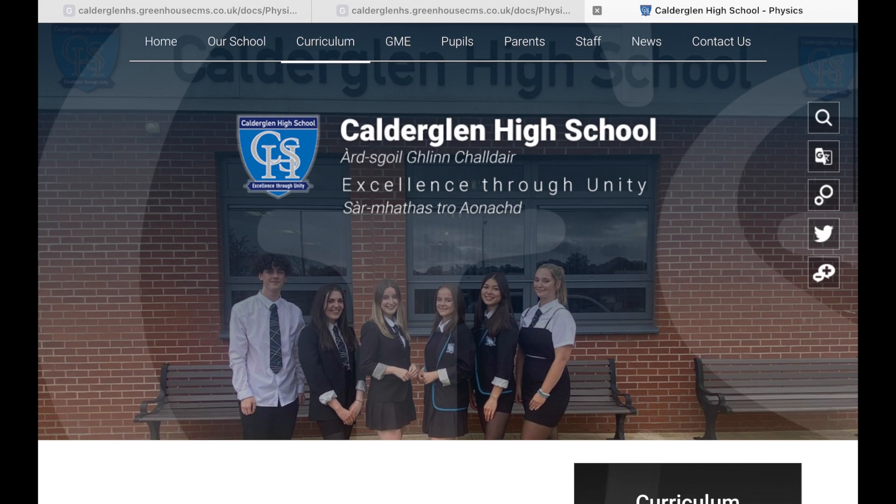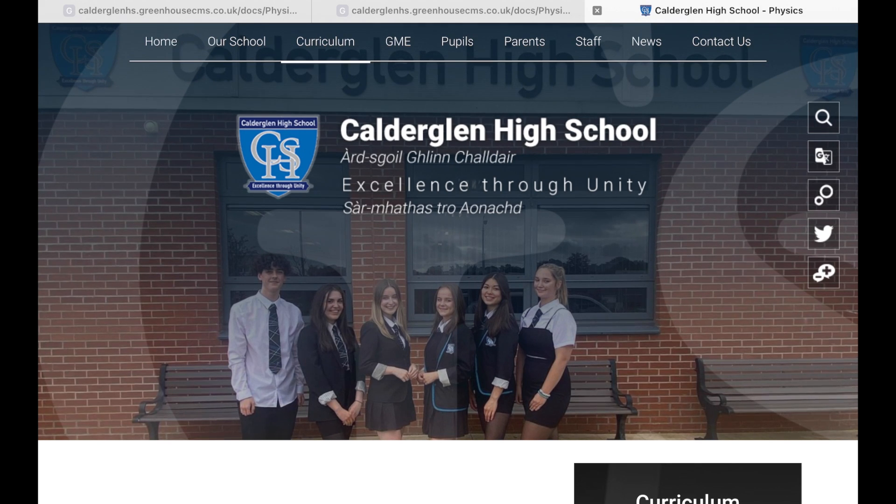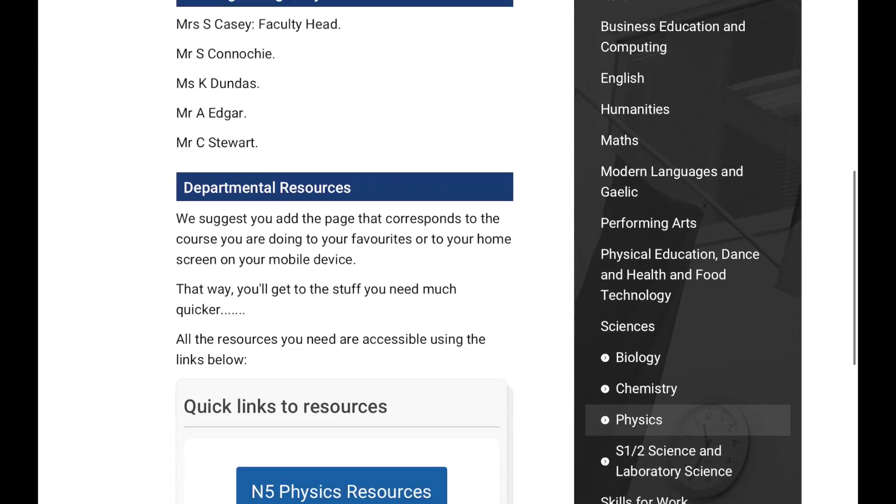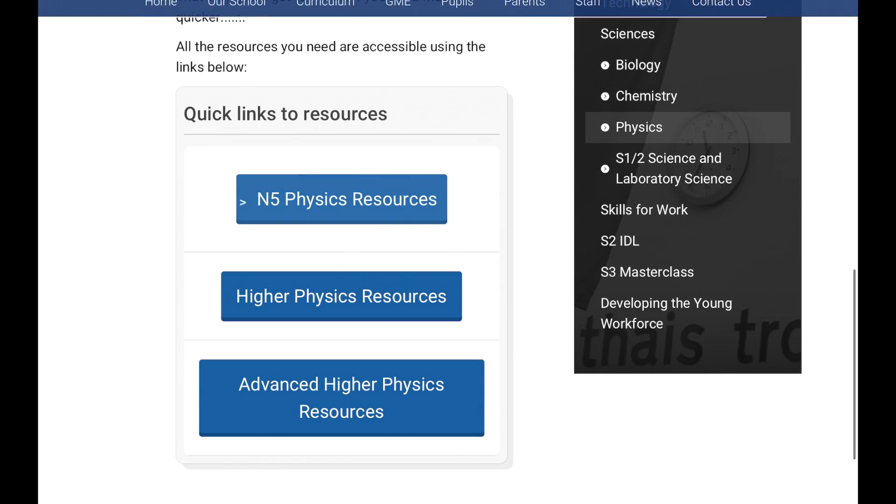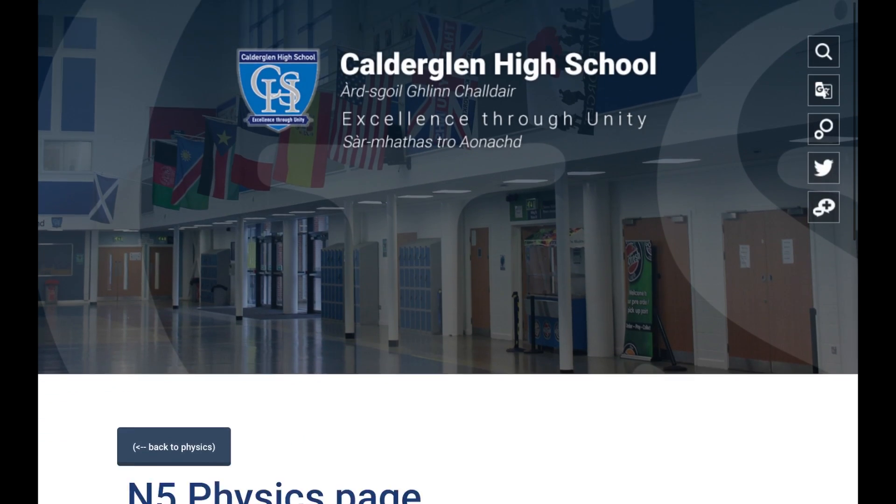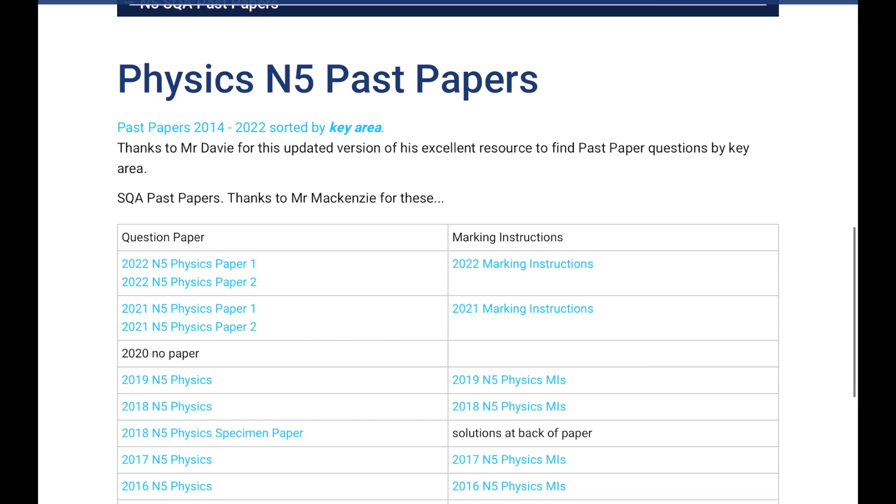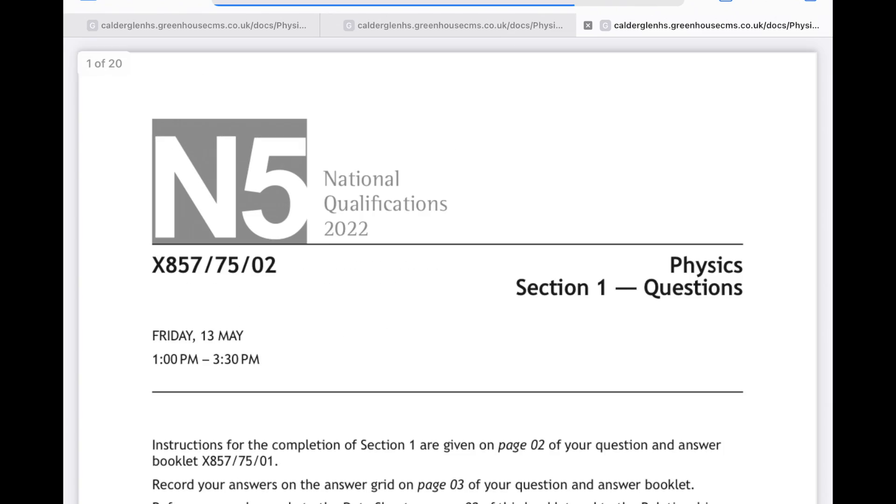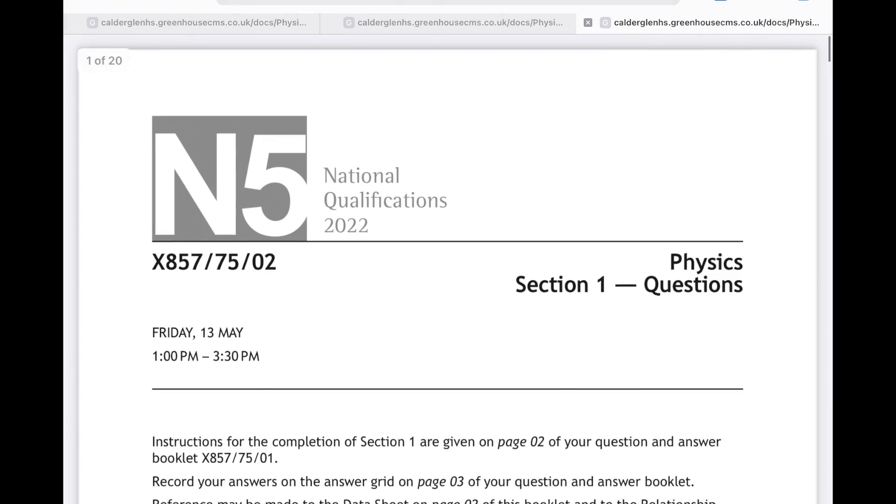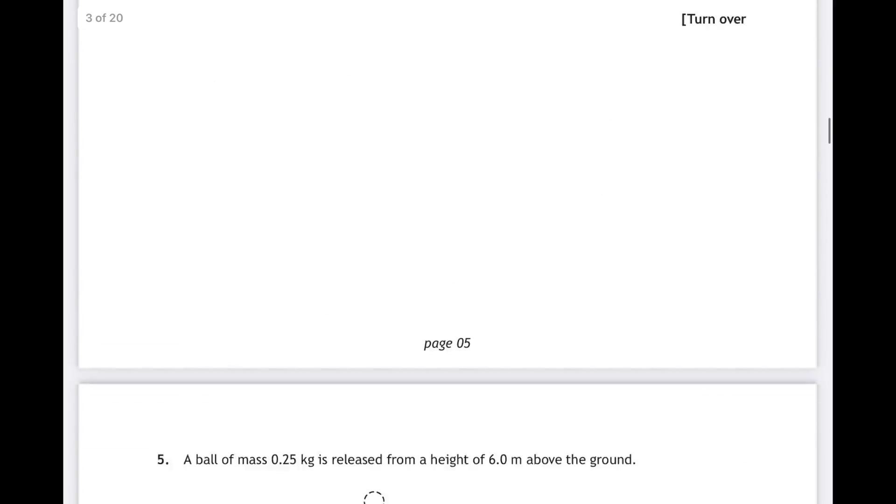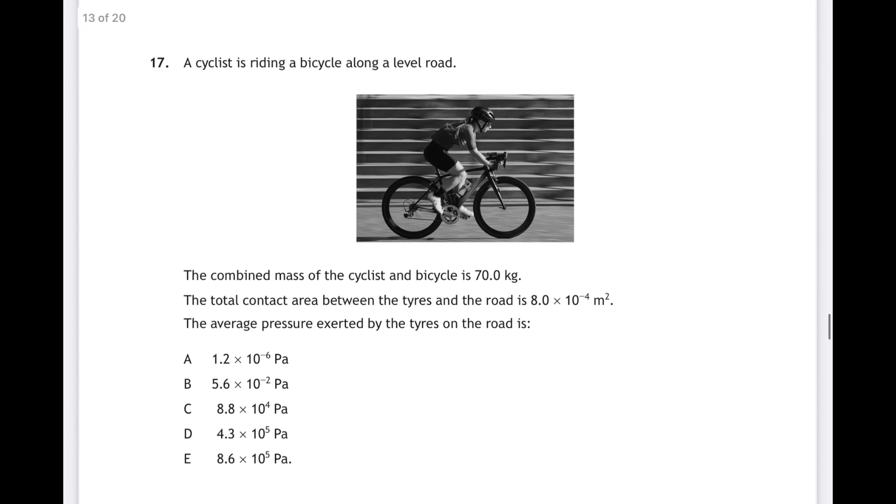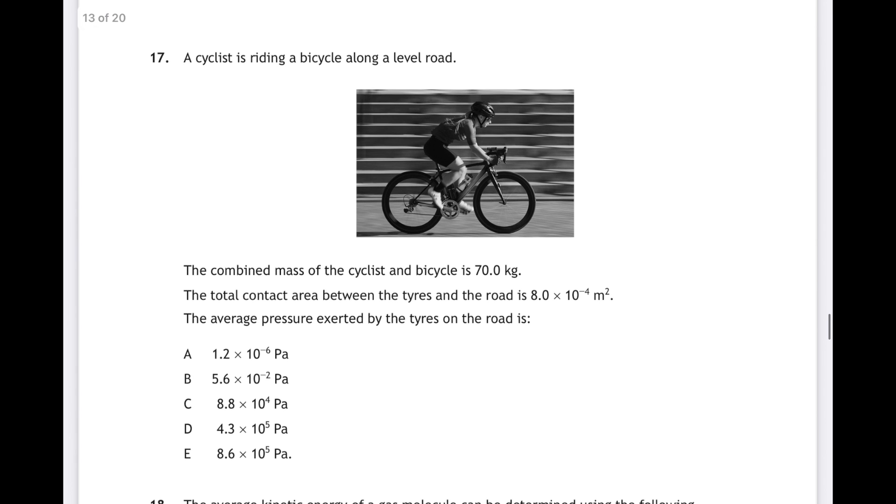I'm going to show you what that issue is, and we're going to use the National 5 2022 paper, Question 17. I've gone to the Calder Glen High School Physics website, this is a fabulous website. It's got all the resources you need for National 5, Higher and Advanced Higher Physics. We are going to go to the National 5 page, to the SQA past papers, and we're looking for the 2022 paper 1, multiple choice, question 17. We'll use this as an example to show you what's wrong with the new Casio calculator.